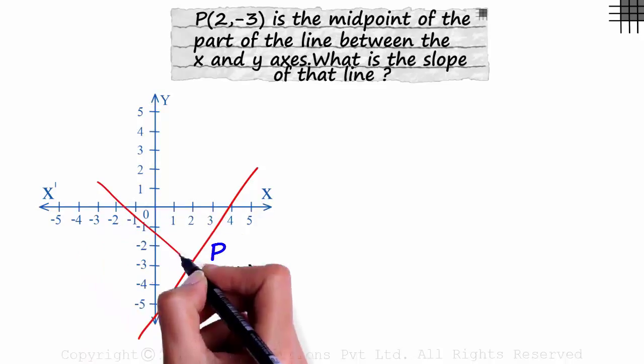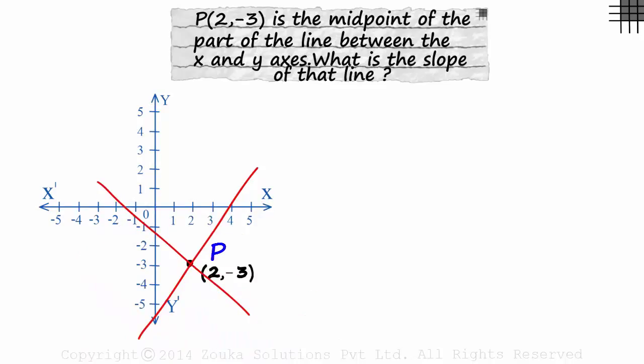Can we have a line like this? No, we cannot. If it passes through the second, third and the fourth quadrant, the segment formed between the x and the y axis is this. But the midpoint has to lie on the segment, not outside it.